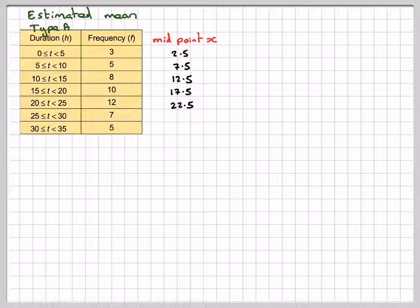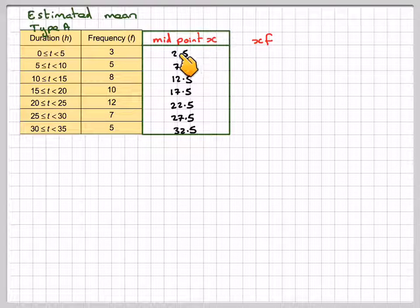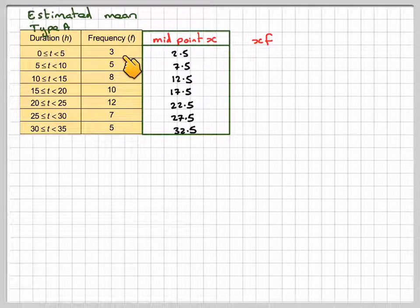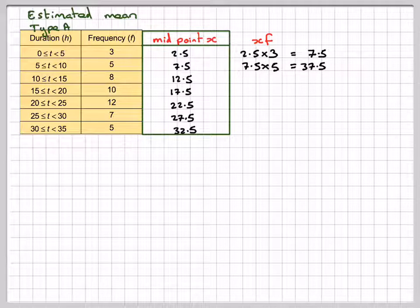So, it's 17.5, 22.5, 27.5 and 32.5. Here, we need to calculate XF. So, we need to do 2.5 times 3, which is 7.5. 7.5 times 5, which is 37.5. 12.5 times 8, which is 100.